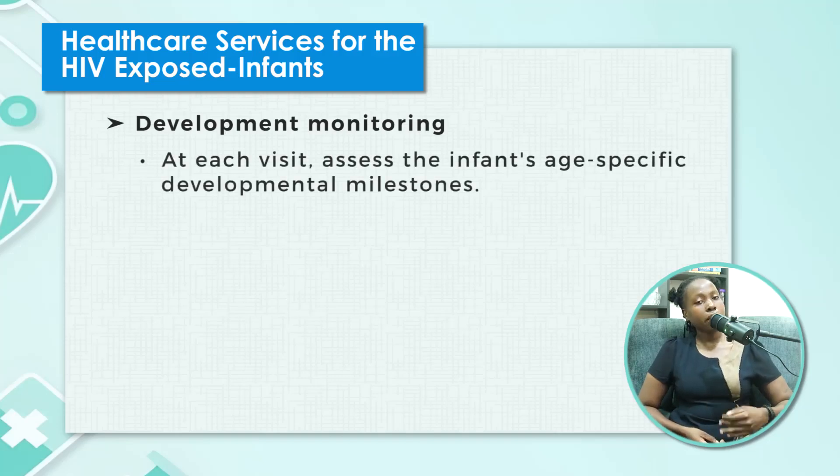Another thing to look out for is their weight. Whenever they come in, measure their weight, assess their MUAC and length, and ensure that they are growing within expected time periods. Make sure you have linked them up to the care they need. Also look at their developmental milestones — are they achieving milestones on time? At six months they should be able to sit without support; at nine months, have they started to crawl? These children are more predisposed to lagging in achieving their milestones compared to unexposed counterparts.